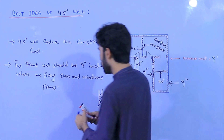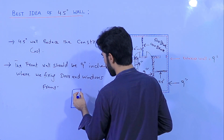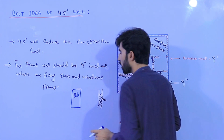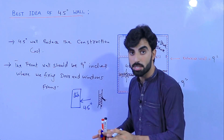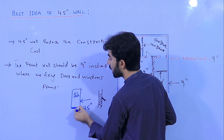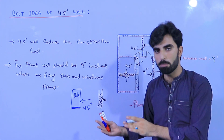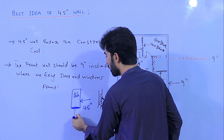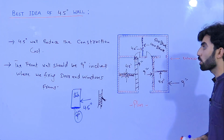For example, if you have a bath here, you can make all walls 4.5 inch, except where we are using sanitary work and fixing PVC pipes. In the case of sanitary works, the wall should be full 9 inches.